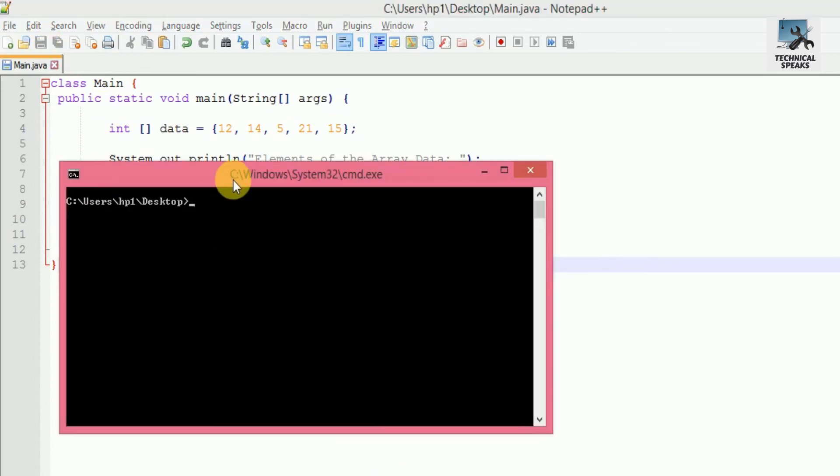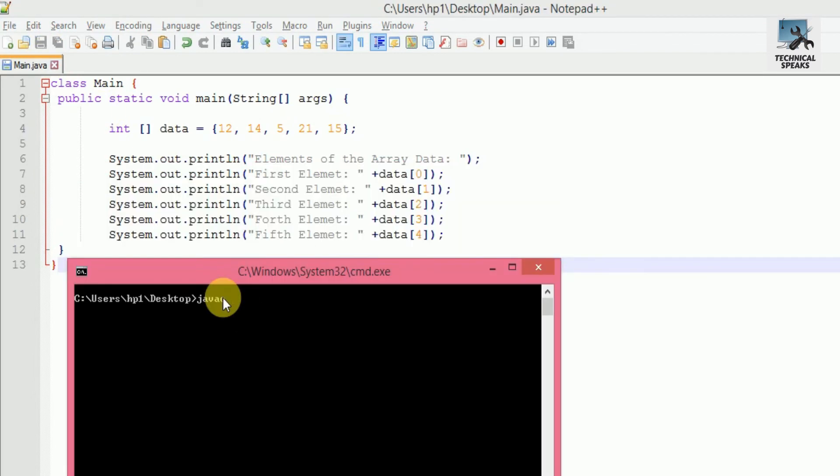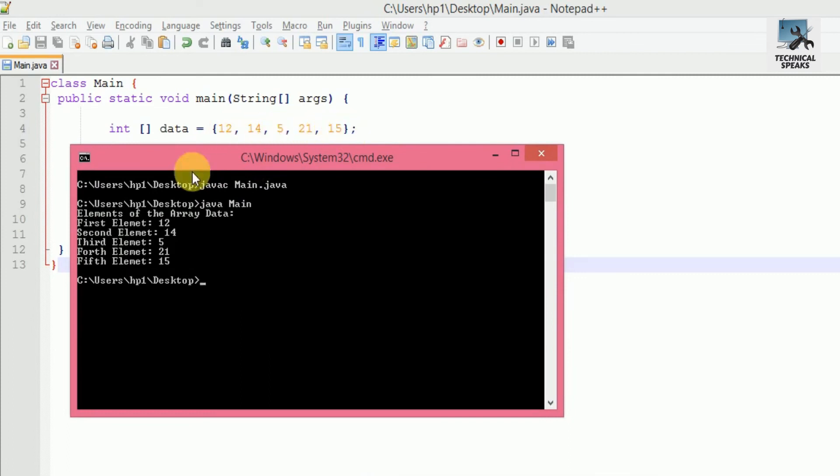Let's save it and run. Open command prompt, compile it first, and run. You can see the elements of the array data: first element 12, second element 14, third element 5, fourth element 21, and last fifth element 15.